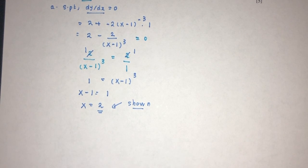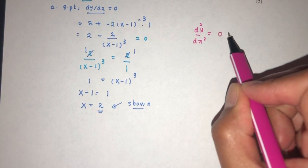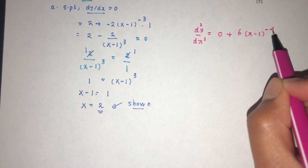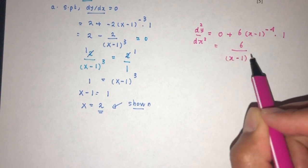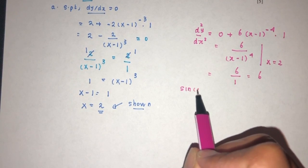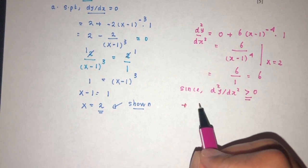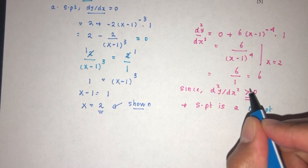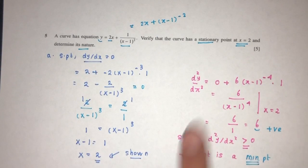To determine the nature of the stationary point, we look at d2y/dx2. From dy/dx, the first term becomes 0 and differentiating the second term: multiply by the power minus 2, then minus 1 gives minus 3, times 1 gives 6 over (x minus 1) to the power 4. At x equals 2, that will be 6 over 1, which is 6. Since d2y/dx2 is positive (6), the stationary point is a minimum point. If it were negative, it would be a maximum point.